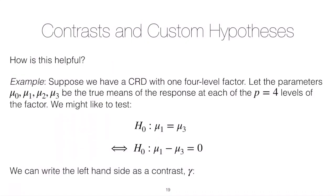So how is this helpful? Well suppose we have a completely randomized design with one four-level factor. Just as a side note, this will work if you don't have a designed experiment but you have observational data and you're just using ANOVA or regression, but let's just assume that our context is a completely randomized design.